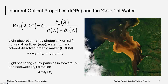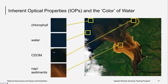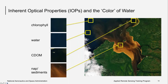Here again is the equation for remote sensing reflectance. Light absorption and backscattering by different constituents in the water column govern the color of light the sensor detects. This Landsat 8 OLI image of Rupert Bay in Northern Canada illustrates the effect of different absorbing constituents. The dark water in the upper right is characteristic of colored dissolved organic matter, or CDOM, coming from rivers flowing into the bay. CDOM-rich water tends to look black, as it absorbs light strongly but doesn't reflect much light backward.